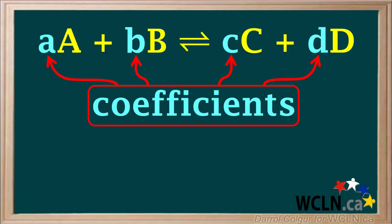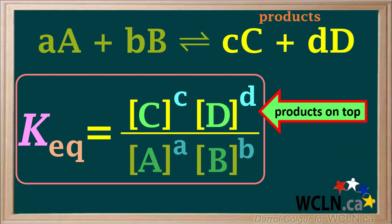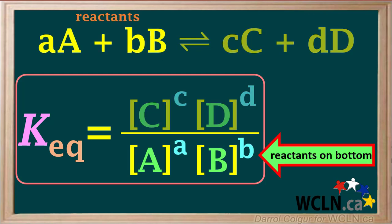Remember that given a chemical equation like this, where the lower case letters stand for coefficients, the KEQ expression is written with the concentration of the products on top, or in the numerator, and the concentrations of the reactants on the bottom, or in the denominator.